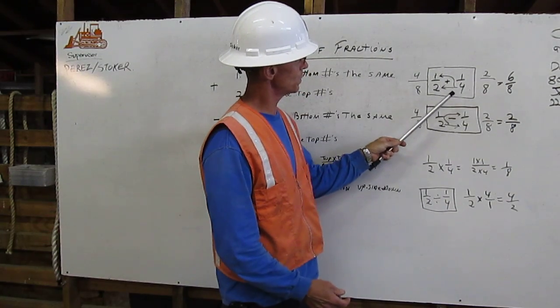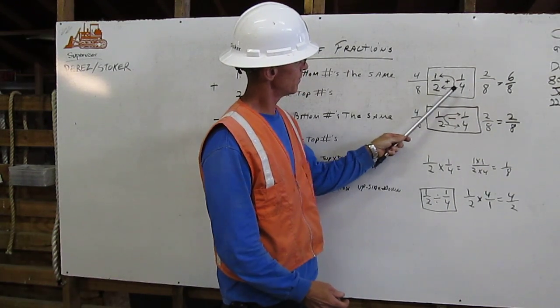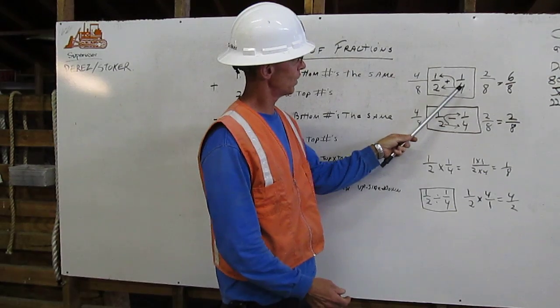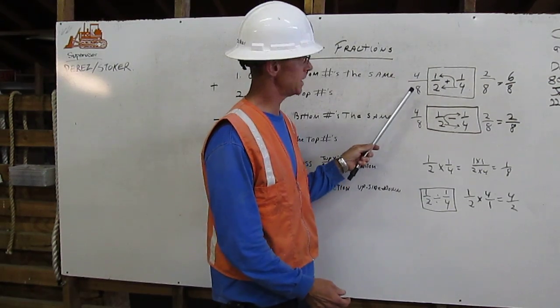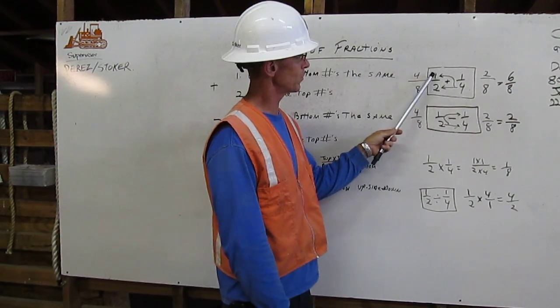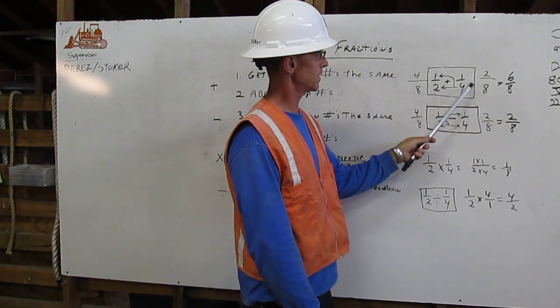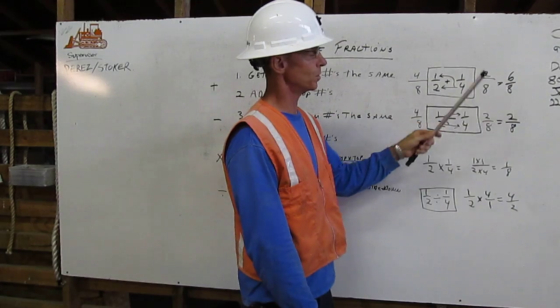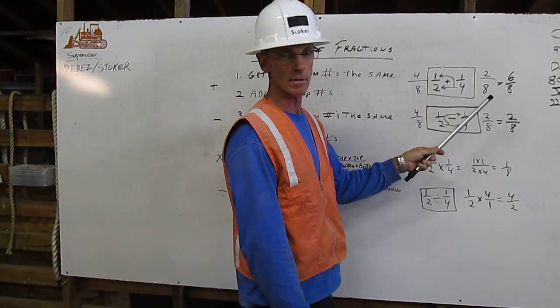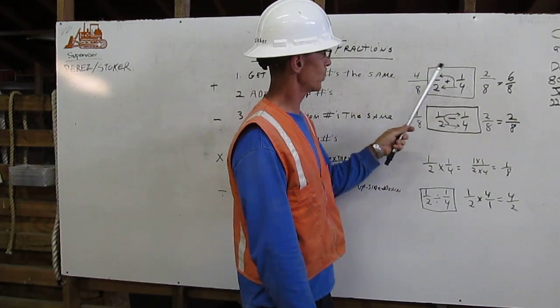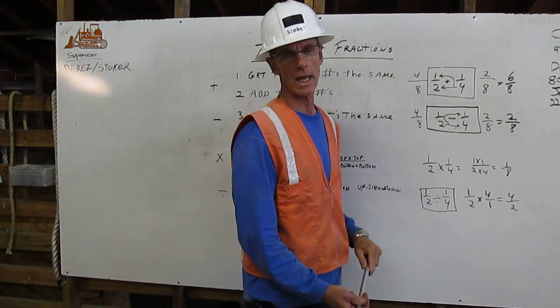So what we will do is we'll cross-multiply. You can see the arrows there. We'll take four times two is eight. Four times one is four. Two times four is eight. Two times one is two. Now we have eights, so we can add four plus two gives us six-eighths.